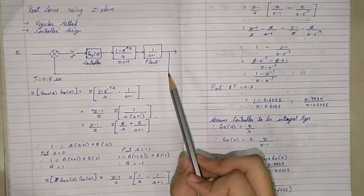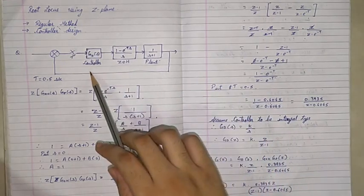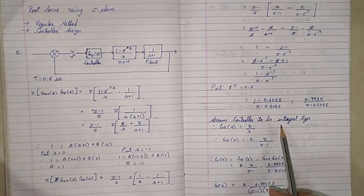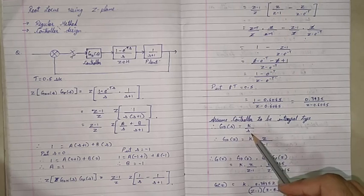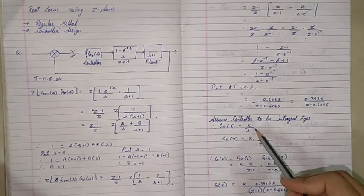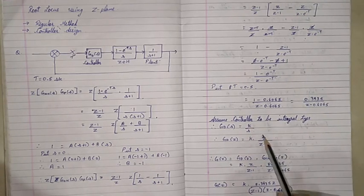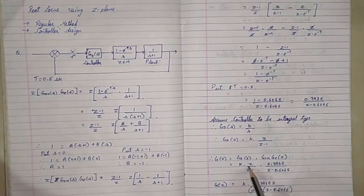Now let us find the Z transform for the controller. We assume the controller is of integral type. The transfer function for an integral type controller is K/S in the S plane. The Z transform of 1/S is Z/(Z minus 1). We multiply the Z transform of the controller with the Z transform of ZOH and plant to get the entire G(Z).